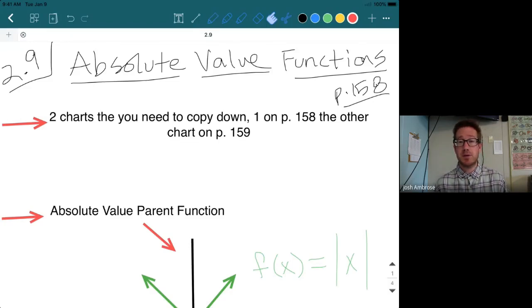Have your textbooks open to page 158, and make sure that you are following along with our notes here. Two charts that you need to copy down. One chart's on page 158, the other 159. Copy down those charts. It is going to really help you in terms of making the connection from Section 6 and flowing into Absolute Values with the same concepts that we did in Section 6.